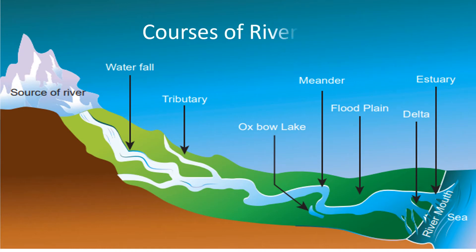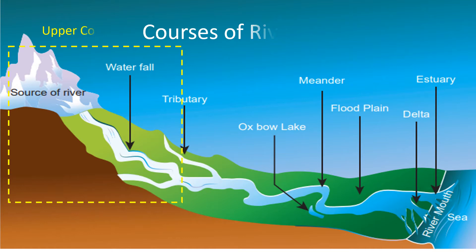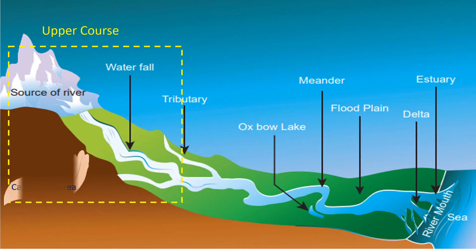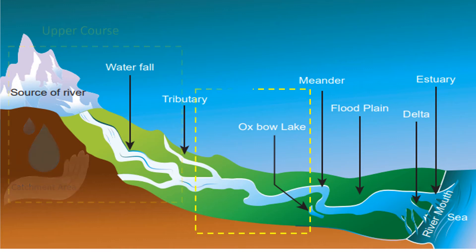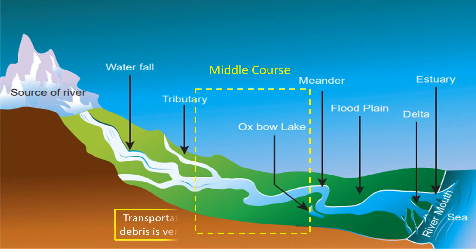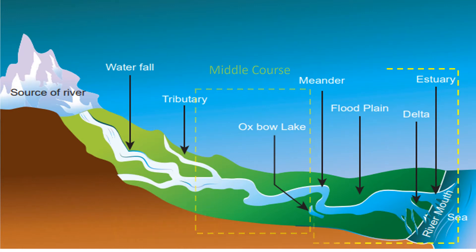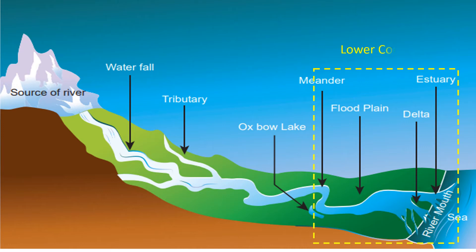As to where it happens, it happens both on land and sea. Here we will see about gradation on land. The place where a river originates is called the upper course — here, erosion is high. And where it reaches the sea or ocean, it is called the lower course — here, deposition is high.